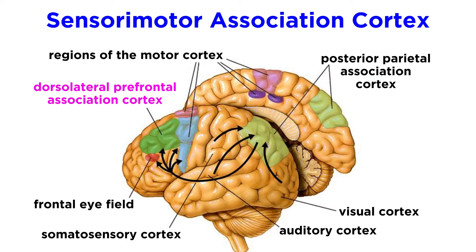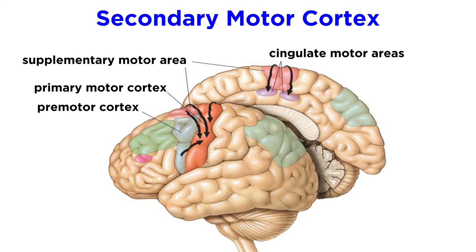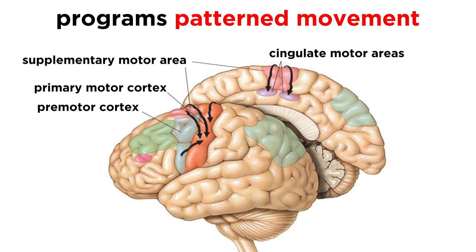The dorsolateral prefrontal association cortex receives information from the posterior parietal cortex and sends information to the primary and secondary motor cortex, as well as the frontal eye field. Moving on to the secondary motor cortex, this area receives information from the two association areas just mentioned and sends information largely to the primary motor cortex. It consists of the supplementary motor area and the premotor cortex. The secondary motor cortex is involved in the programming of patterned movement upon being given instructions by the dorsolateral prefrontal cortex.